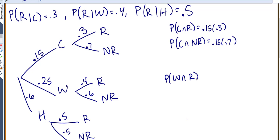Probability of it being warm and rain would be 0.25 times 0.4. Probability of being warm and not rain equals 0.25 times 0.6.